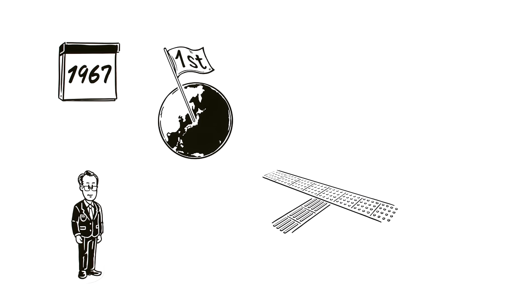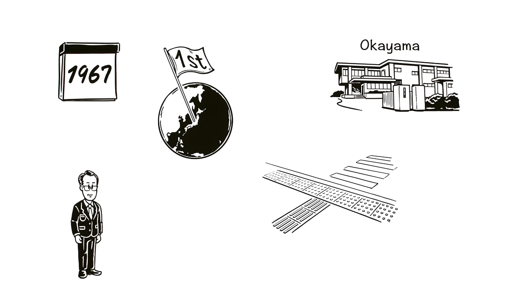In 1967, Miyake installed the world's first tactile tiles along a busy road near the Okayama School for the Blind and Visually Impaired.